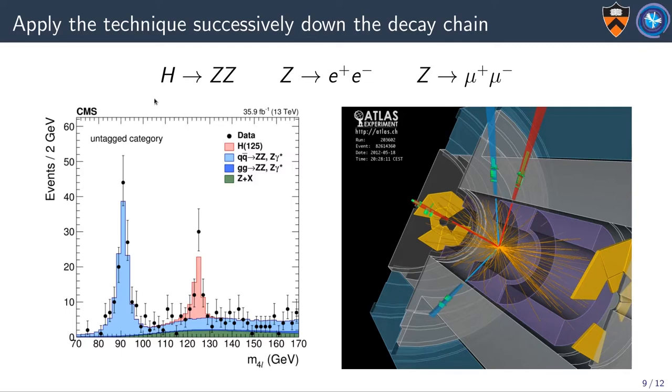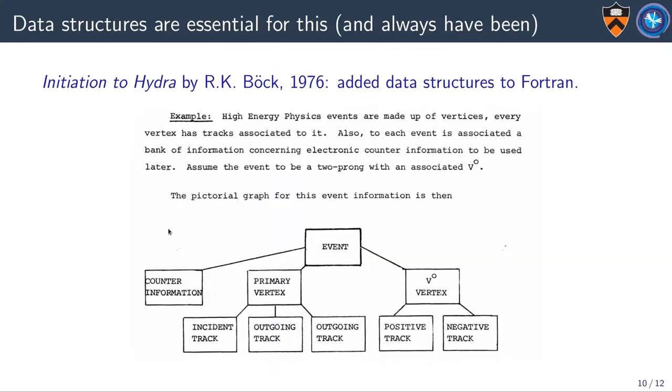We can apply this technique successively down the decay chain. Higgs goes to ZZ, one of the Z's decays to electrons, the other decays to muons, and then you see a peak, a mass peak, for the newly discovered Higgs boson. But data structures are essential to this. You notice that I was looping over a variable number of tracks in each event, and there's trillions of events.